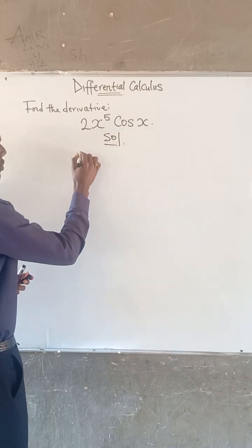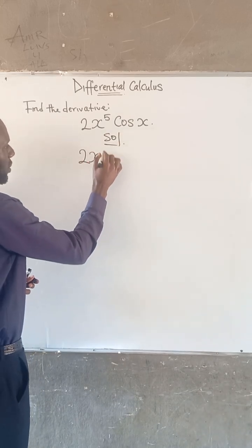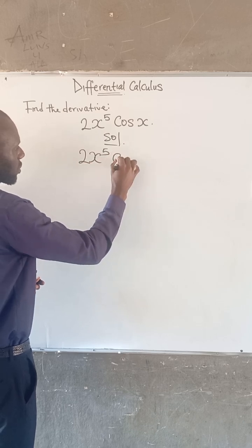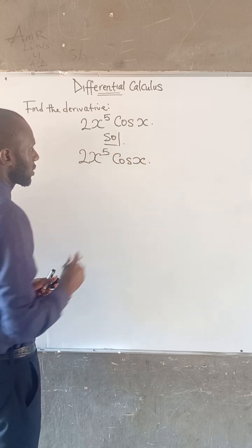So therefore, we are given 2 multiplied by x to the power of 5, cos x.